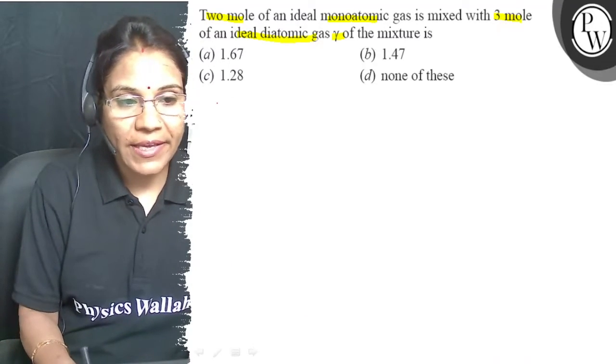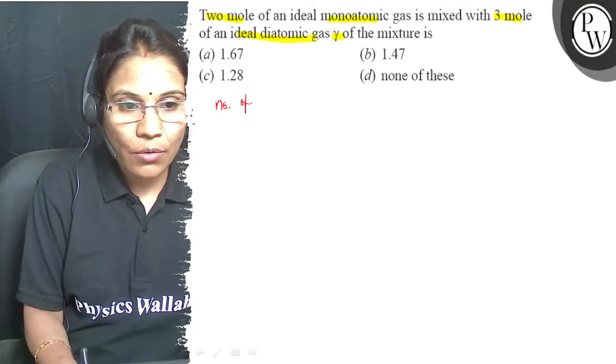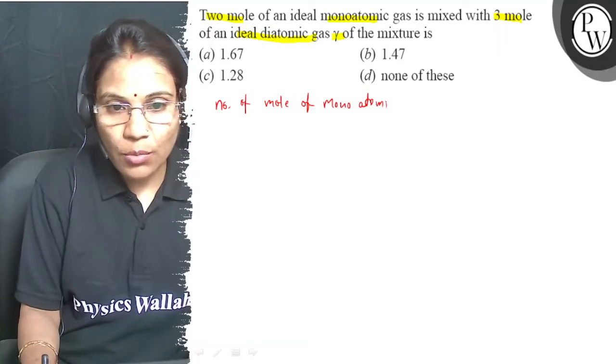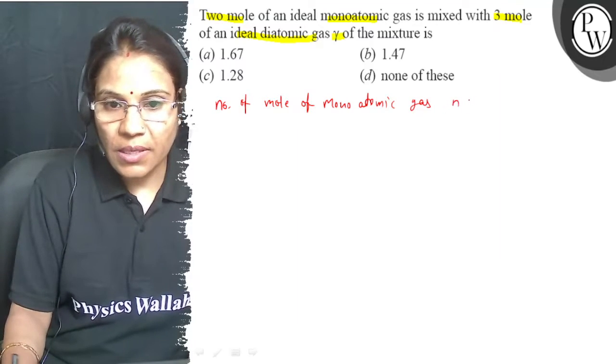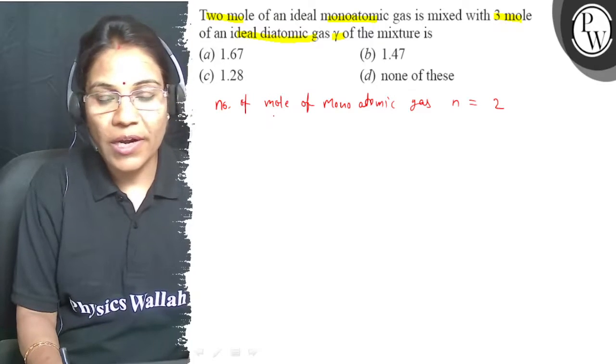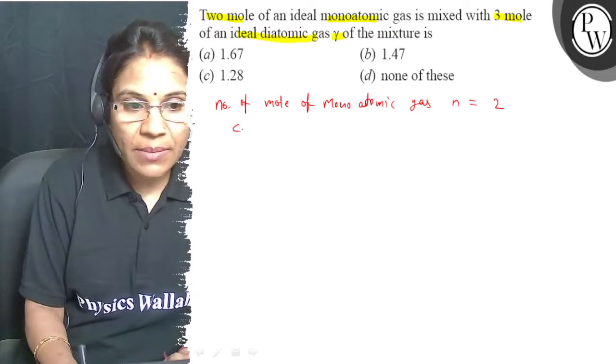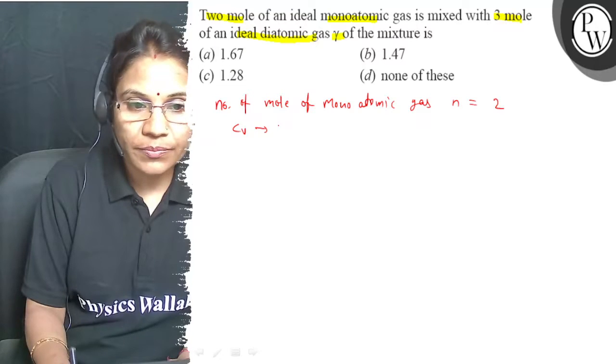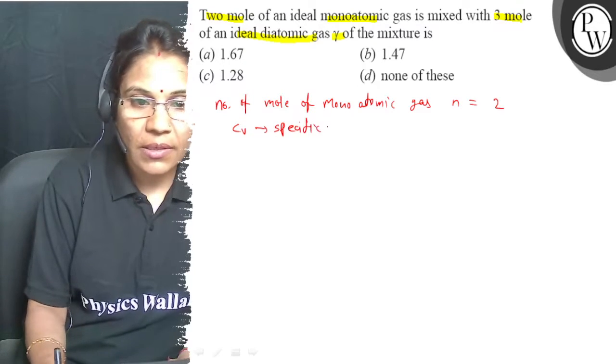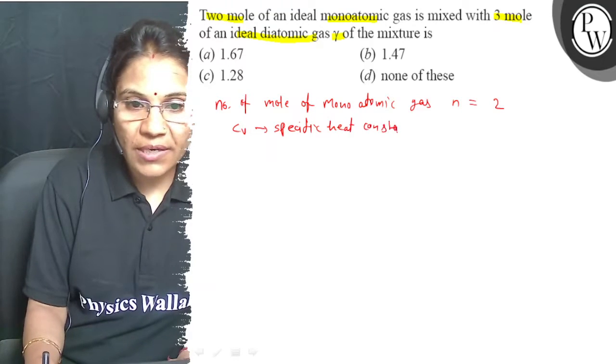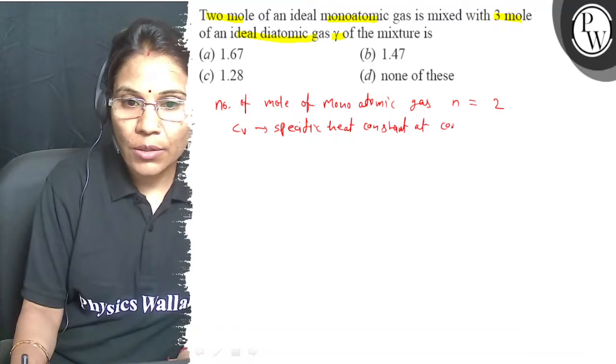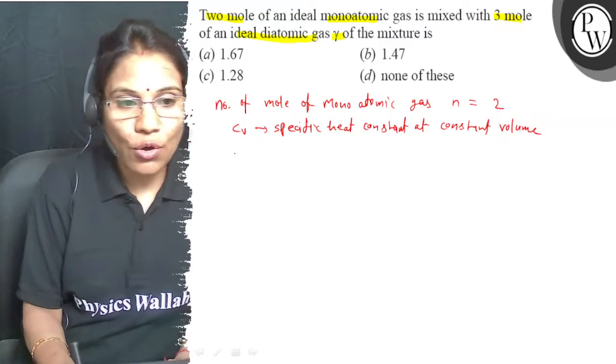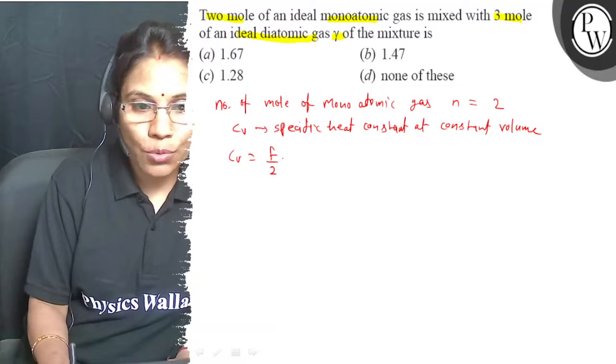Monoatomic gas, 2 mol. Number of mol of monoatomic gas n is equal to 2. For monoatomic gas, cv value which is the specific heat constant at constant volume. The value of cv is equal to f/2 times R.